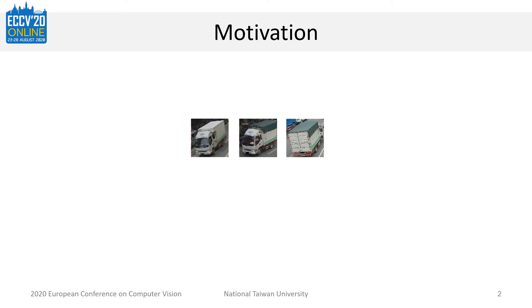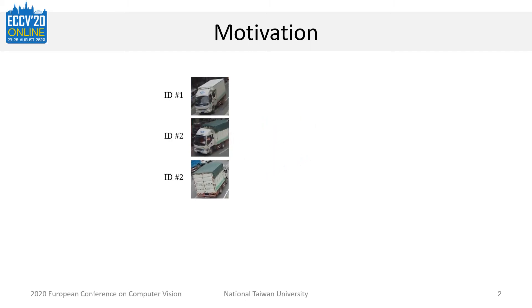Vehicle Reidentification focuses on matching vehicle images with the same identity. In some hard cases, even two different vehicles with similar viewpoint and vehicle type would have similar appearance. In contrast, for two images from the same vehicle, it could still have dramatically different appearance.